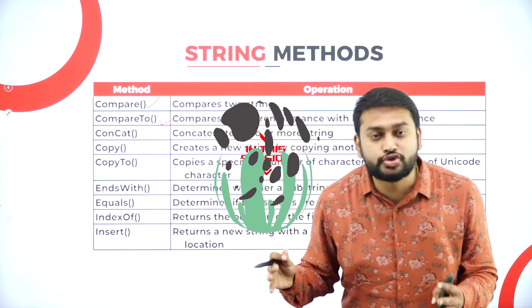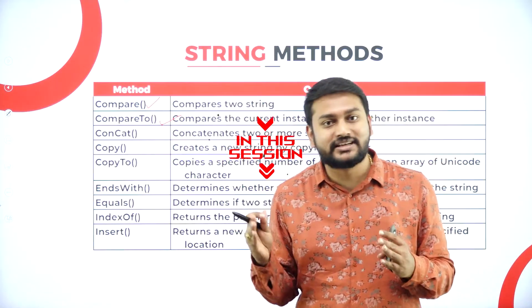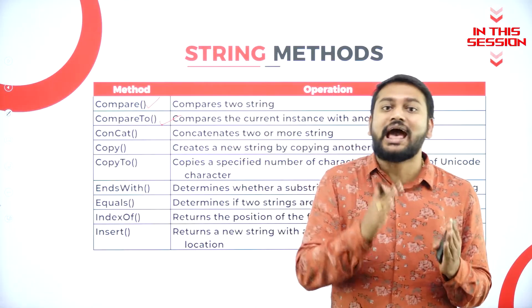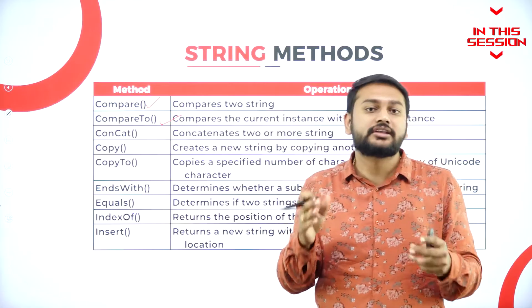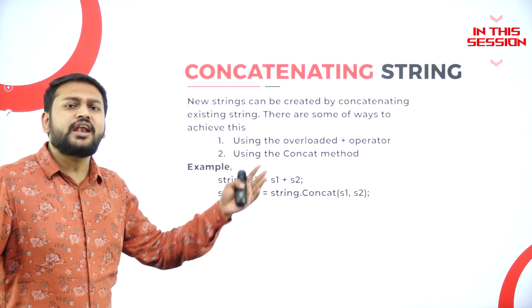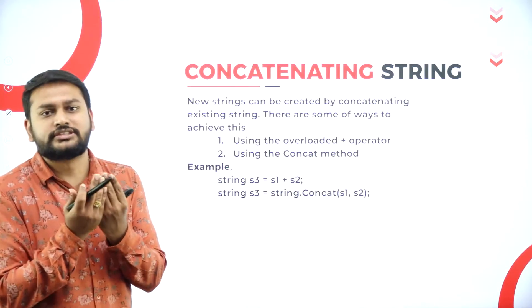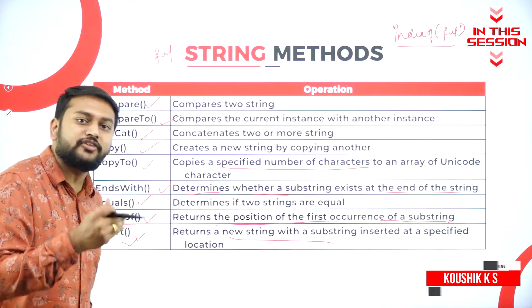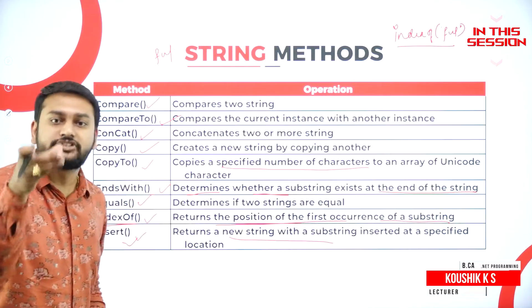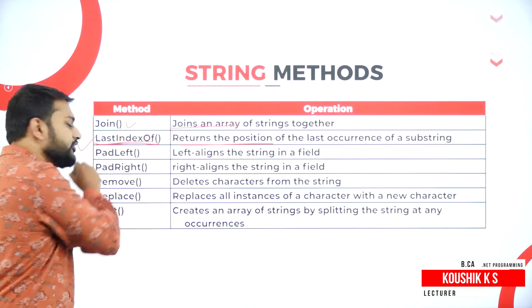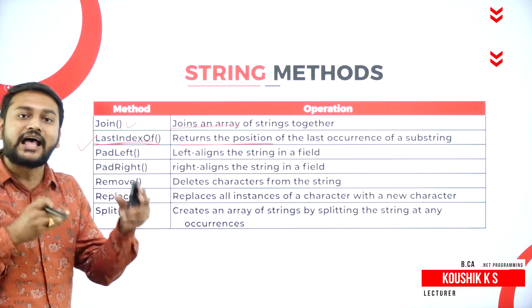What happens with ComparedTo? It will start checking character by character when you have two strings. Concatenation is adding two things. IndexOf is to get the first occurrence of the substring, and LastIndexOf is to get the last occurrence of that substring.